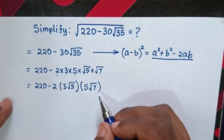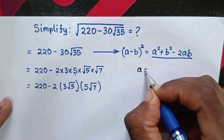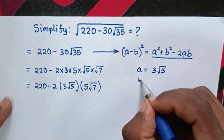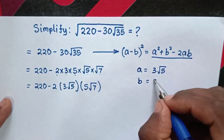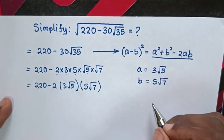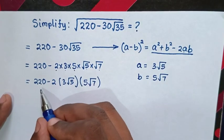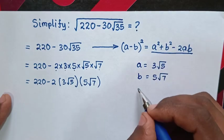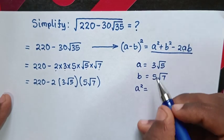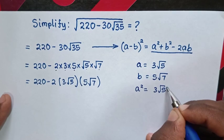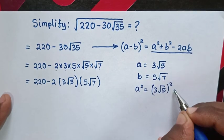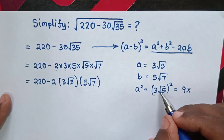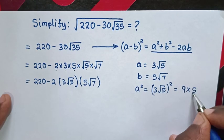So from here we get the value of a, which is 3 square root of 5, and b, which is 5 square root of 7. Then, 220 is the sum of a squared plus b squared. So a squared equals (3 square root of 5) squared, which is 3 squared times square root of 5 squared, equal to 9 times 5. So a squared is equal to 45.